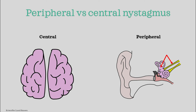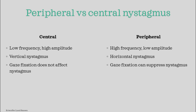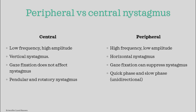So how can we differentiate central from peripheral nystagmus? First, a central problem often shows low frequency and high amplitude, while peripheral nystagmus typically shows high frequency and low amplitude. Second, if the direction of nystagmus is vertical — going up and down — it hints towards a central cause, whereas horizontal nystagmus suggests peripheral. Third, if nystagmus disappears when the patient fixates on an object, that hints towards a peripheral cause. Also, jerk nystagmus with a quick and slow phase hints towards peripheral, while pendular or rotatory nystagmus hints more towards a central cause — unless it is vertical jerk nystagmus, which again suggests central.